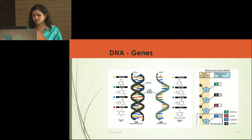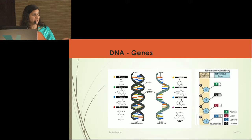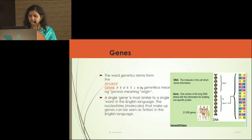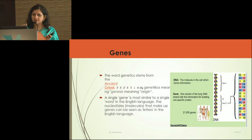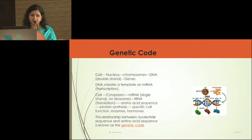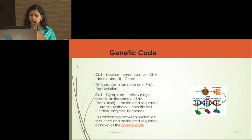DNA has a double helical structure with bases AGCT, which you all remember as nitrogenous bases. RNA is a single-stranded structure; DNA is a double-stranded structure. The way these bases are arranged forms a gene. The word 'gene' means origin. Unless AGCT is arranged in a particular way, it will not make any sense. If arranged correctly, it dictates the formation of particular proteins, which carry out enzymatic and hormonal functions.